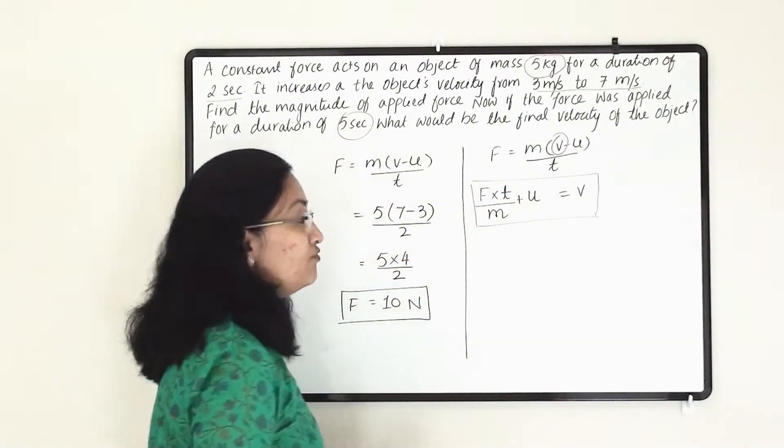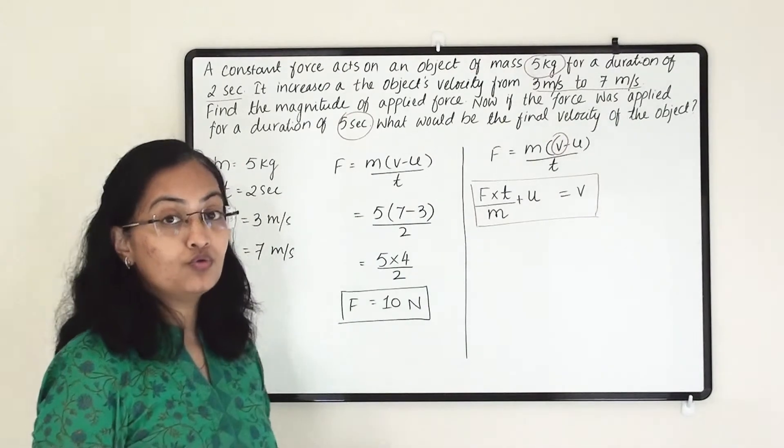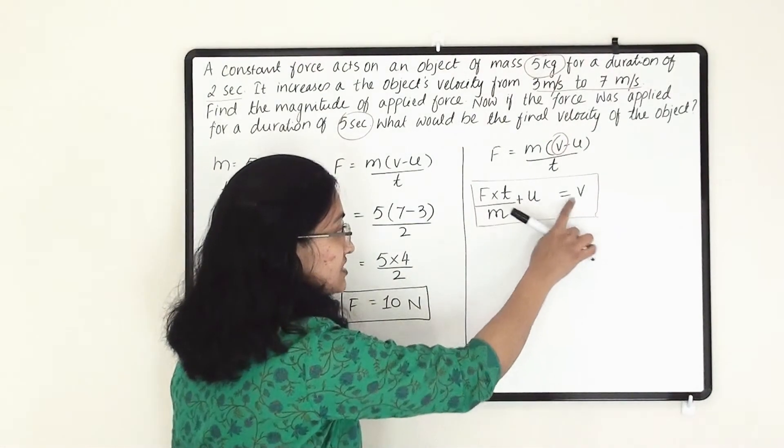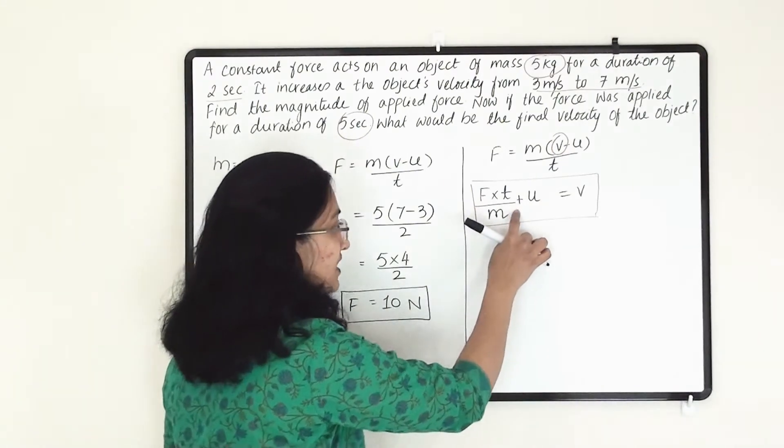Why? Because all the other values we know, only value which we do not know is V, that is final velocity. That we are going to find out from here.